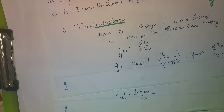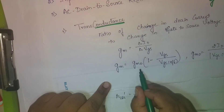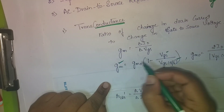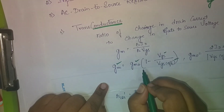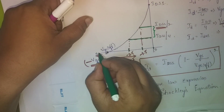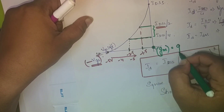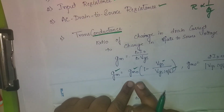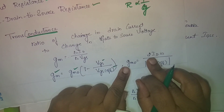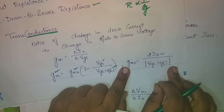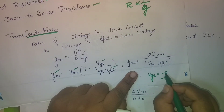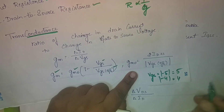If they ask you to find the transconductance of a device at a certain point, you can use the formula: gm = gm0 × (1 − Vgs / Vgs_off). Here gm0 is the transconductance when Vgs is equal to 0. It can also be calculated as gm0 = 2 × Idss / |Vgs_off|. Note that Vgs_off is a negative value, so we take the modulus.